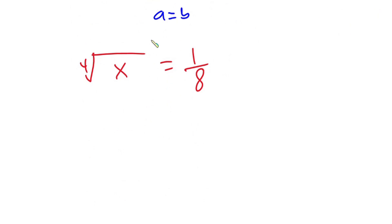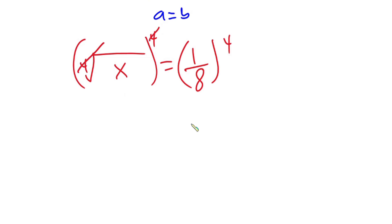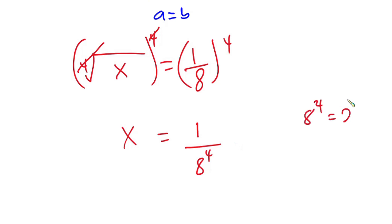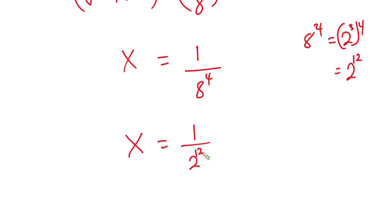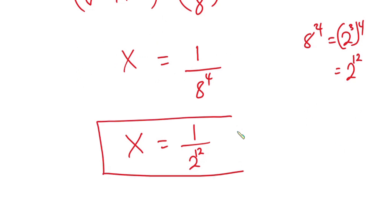Since we want to find the value of x, let's raise each side to the fourth power, so that the fourth root will cancel. We then have x is equal to 1 to the fourth power, which is still 1, over 8 to the fourth power. And 8 to the fourth power is the same as 2 to the power 3, to the power 4, which is 2 to the power 12. So in place of 8 to the power 4, I put 2 to the power 12, and we have x is equal to 1 over 2 to the power 12. That is our final answer.